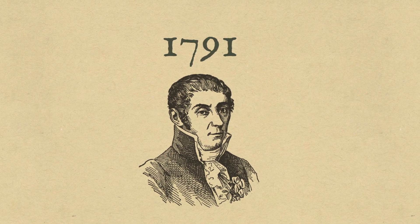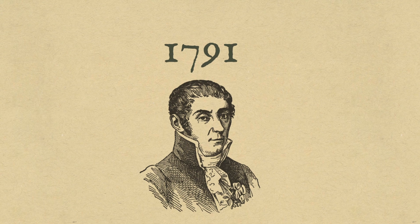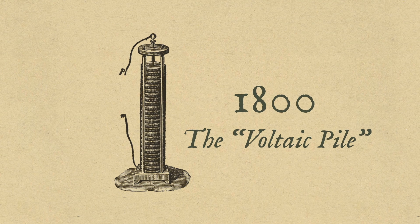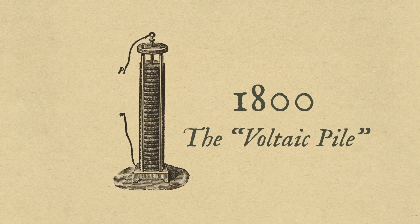Volta experimented with different metals, published his findings in 1791, and then ultimately created the first modern battery in 1800. It was called the Voltaic Pile and would form the basis for future battery innovations.